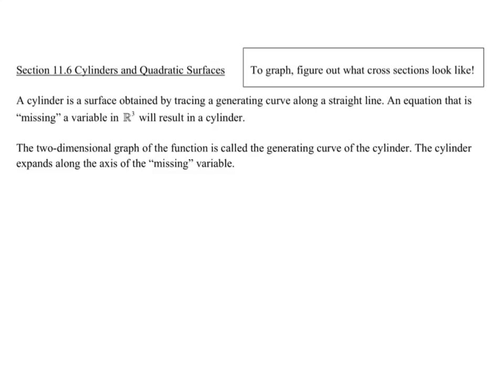A cylinder in three dimensions is a surface obtained by tracing a generating curve along a straight line. An equation that's missing a variable in R³ will result in a cylinder. The two-dimensional graph of the function is called the generating curve of the cylinder, and the cylinder expands along the axis of the missing variable. So if you had an equation with just an x and a z in it, it would expand along the y-axis.